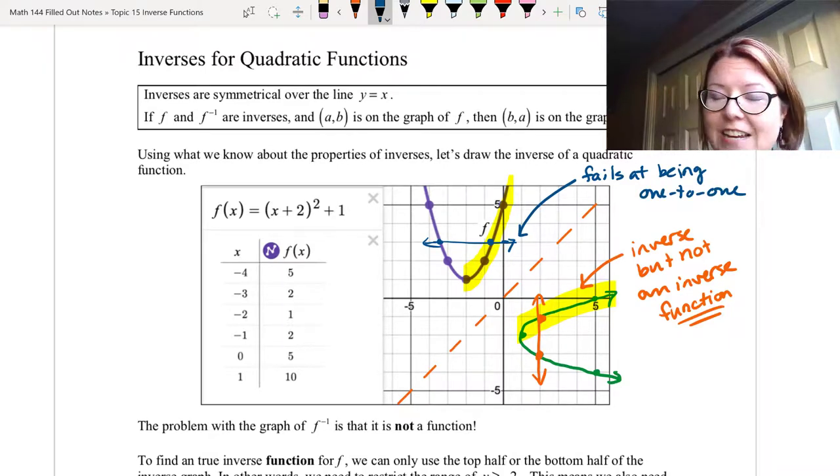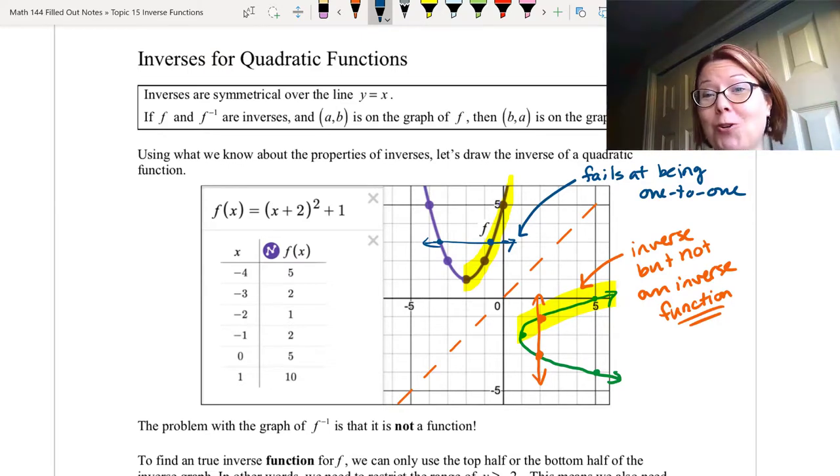To find the inverse of a function and have it actually be a function, it's important for the original to actually be both a function and one-to-one. In other words, it needs to pass both a vertical line test and a horizontal line test.